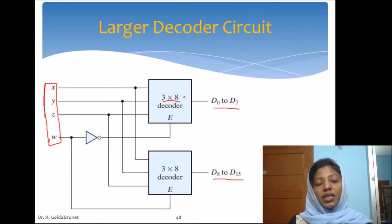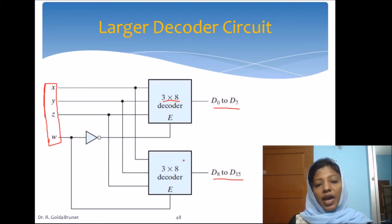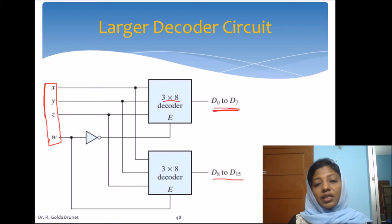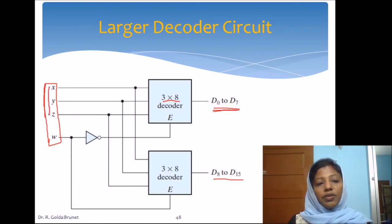We have considered the implementation of the decoder using AND gates. When W is equal to 0, all the AND gates of this decoder will be 0, and based on X, Y, Z, one of the AND gates of the other decoder will be 1. When W is equal to 1, all AND gates corresponding to the first decoder will be 0, and one AND gate will be 1 based on the values of X, Y, and Z.